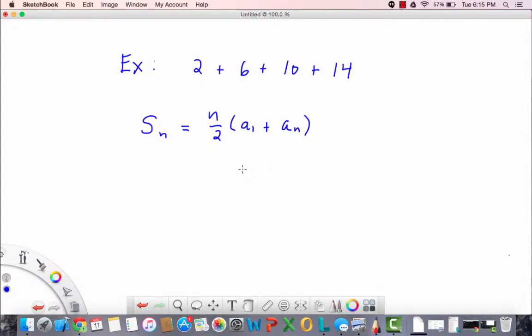So using the series that I've written on the screen, we can say that S sub 4, which is the sum of the first four terms, is n over 2, and n is 4 as I stated, times the quantity a sub 1 (the first term) plus a sub 4 (the last term, which is 14). This simplifies to 2 times 16, which is 32.